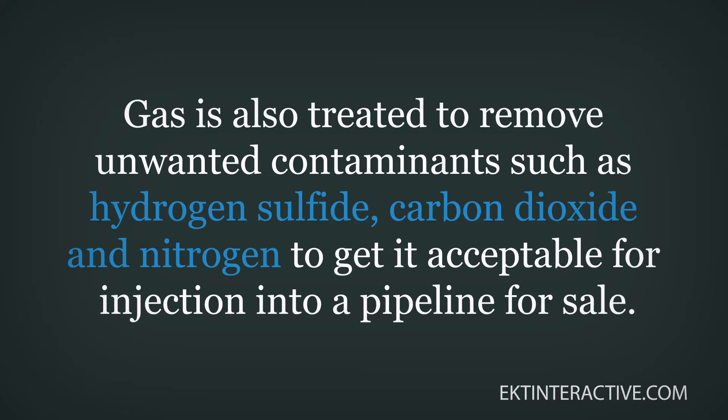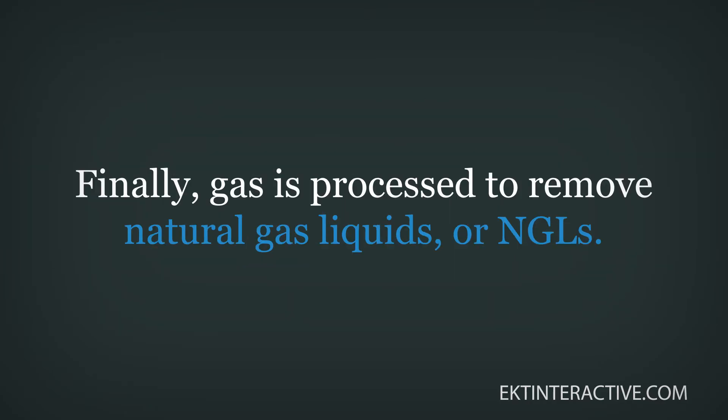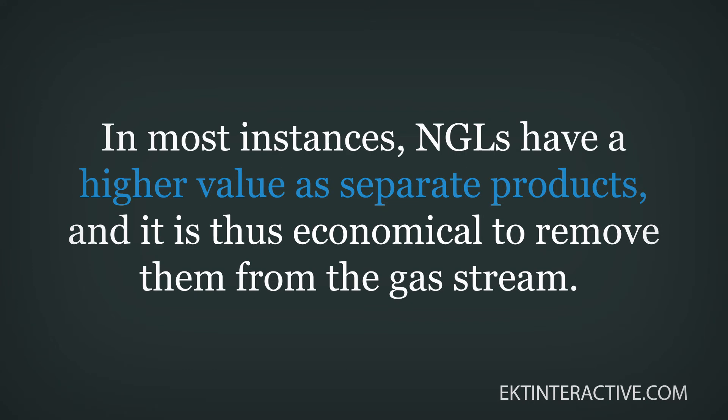Gas is sent through a dehydrator to remove water vapor. Almost all the water vapor must be removed before a gas can be sold. Removal of water vapor prevents hydrates and corrosion once the gas is transported via pipeline.